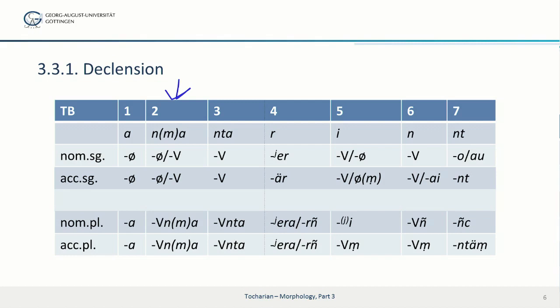Class two is the na or ma. There are two different subclasses with either unmarked or vowel endings in the singular, and vowel plus na or ma endings in the plural.